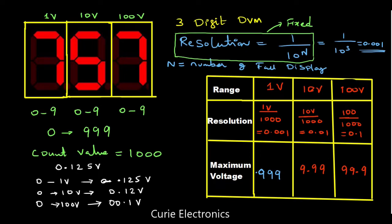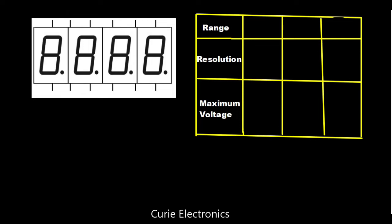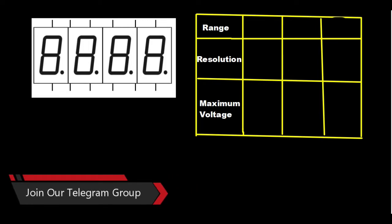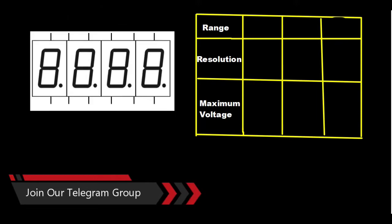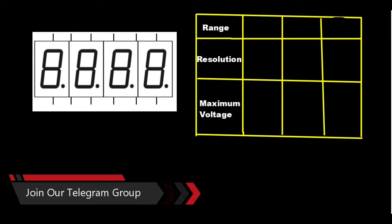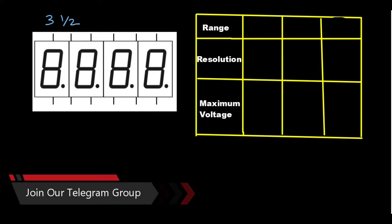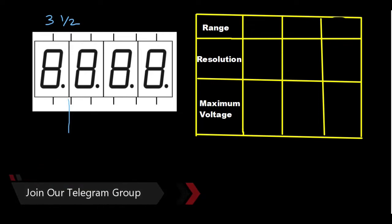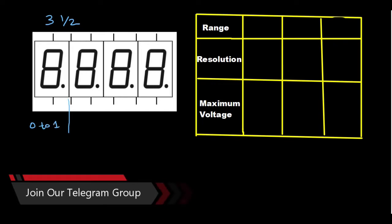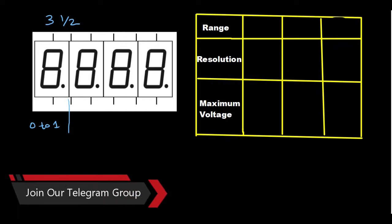Now we will see what difference it makes when we add a half digit. This is a three and half digit display. We have three full digits and this is the half digit. This half digit means the MSB is the half digit — this can vary from 0 to 1 only, not more than that. That is what you mean by half digit. The three full digits can vary from 0 to 9 each.